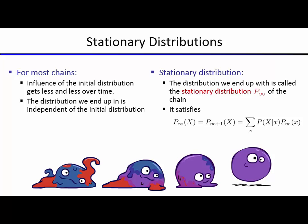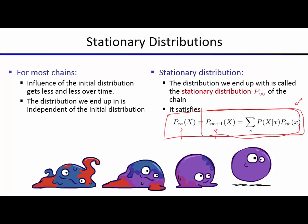The stationary distribution satisfies an equation derived from convergence: rather than running the mini forward algorithm until convergence, you write out the equation characterizing convergence. At time t equals infinity, the distribution at t equals infinity plus one must equal the distribution at t equals infinity. Writing out the mini forward update and substituting gives an equation involving only p_infinity(x), which we can solve as a linear system.